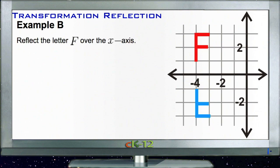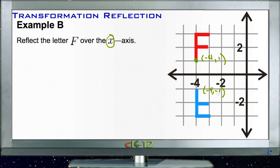Now let's look at part B — reflect the letter F over the x-axis. When reflecting over the x-axis, the x coordinate stays the same and the y coordinate changes sign. So if the bottom point of our F is at (-4, 1), its new location would be (-4, -1). If the top point was at (-4, 3), its reflection would be at (-4, -3).